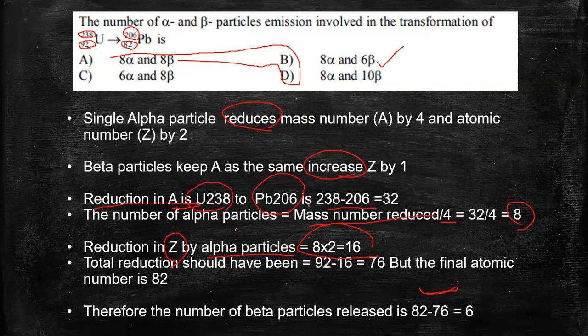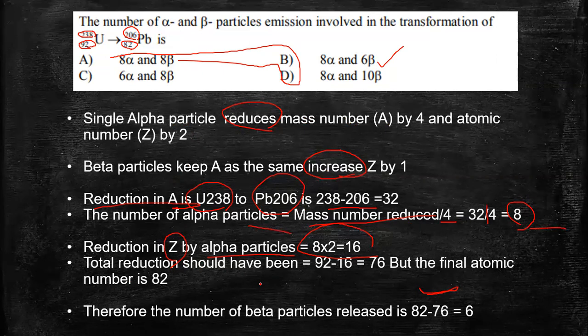Now the point I will explain here once more, single alpha particle reduces mass number by 4 and atomic number by 2. Beta particle increases the atomic number by 1. So in any question like this, initially you need to find the alpha particles by finding the change in mass number. So once you do the change in mass number, divide it by 4 to find the number of alpha particles. Next, try to understand how much change should have been made in the atomic number by the alpha particle emission and see what is the difference. Those many beta particles would be emitted. So this is how we are dealing with the nuclear chemistry kind of question where alpha and beta particle number of questions are asked.